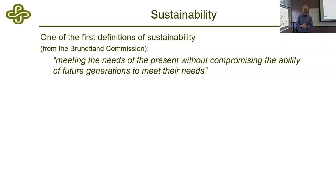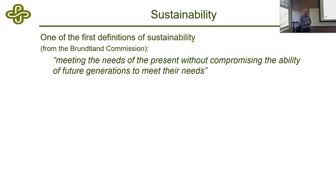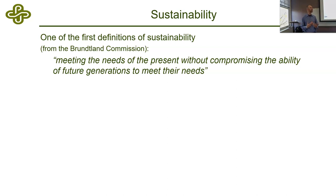Meeting the needs of the present without compromising the ability of future generations. Using our resources in balance, not affecting things for future generations. If our way of living cannot be sustained by our children and grandchildren, then there's a problem, and we should figure out a way to live sustainably — that people can practice generation after generation and be in balance with the earth.